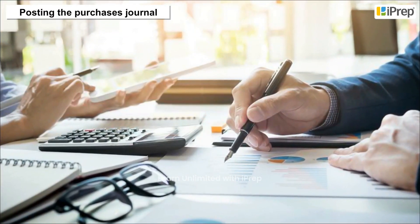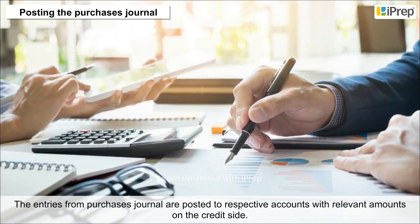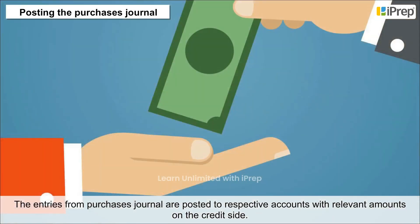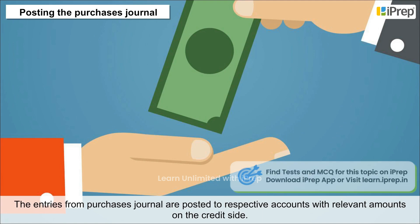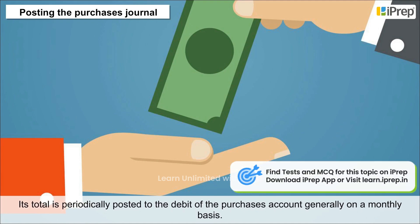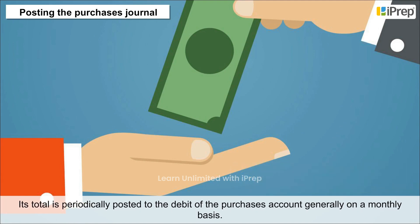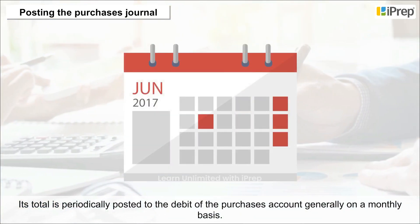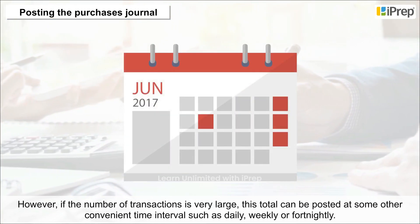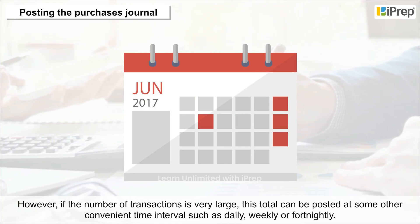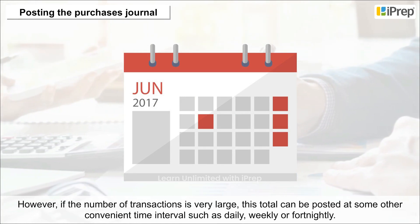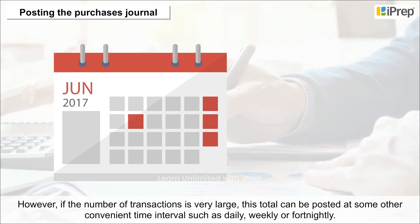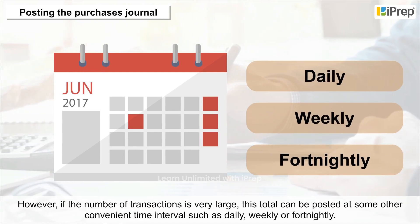The entries from the Purchases Journal are posted to respective accounts with relevant amounts on the credit side. The total of the Purchases Journal is periodically posted to the debit of the Purchases account, normally on a monthly basis. However, if the number of transactions is very large, this total may be posted at other convenient intervals, such as daily, weekly, or fortnightly.